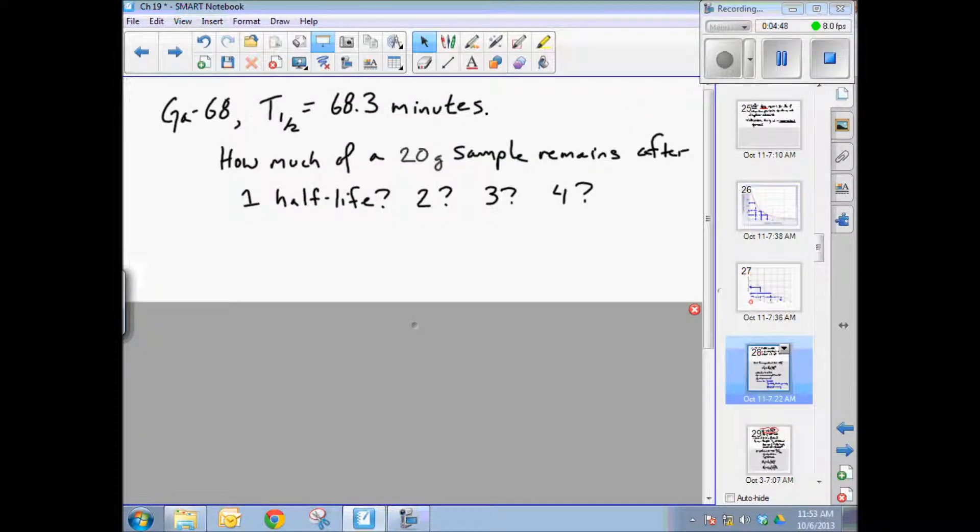Here's an example. Let's take a radioisotopic element, gallium-68, and it has a half-life of a little over an hour, 68.3 minutes. How much of a 20-gram sample remains after one half-life, or two half-lives, or three half-lives? Now, this is something you can do on your fingers and toes. If we take 20 grams and go through one half-life, we're obviously going to have 10 grams. Two half-lives, we're down to 5 grams. Three half-lives, 2.5 grams. You get the idea. Four half-lives, it would be 1.25 grams.